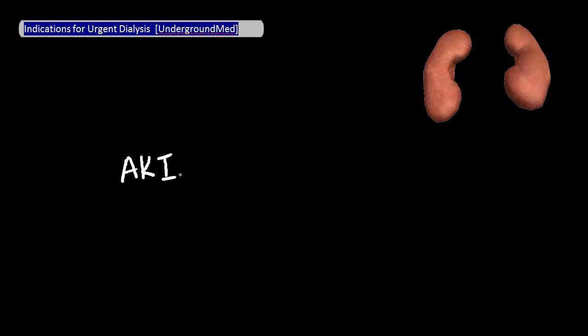Let's say you have a patient with acute kidney injury, and he or she isn't getting better from all of your treatments and may be progressing towards failure. At what point do you want to consider giving dialysis, which is basically just filtering the bad stuff out of his blood artificially? In this brief video, I want to go over the accepted indications for urgent dialysis and some of the symptoms a patient might have if they have one of these indications.